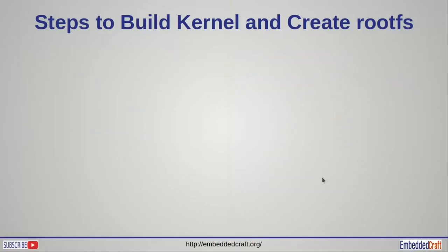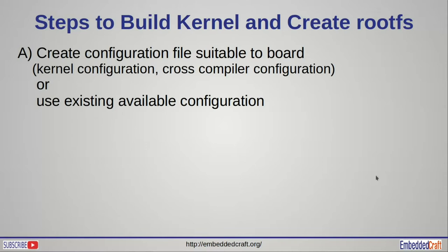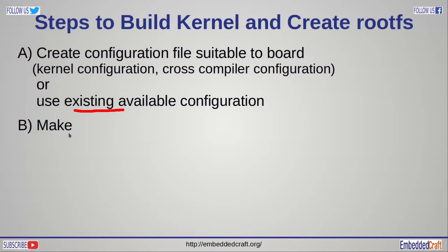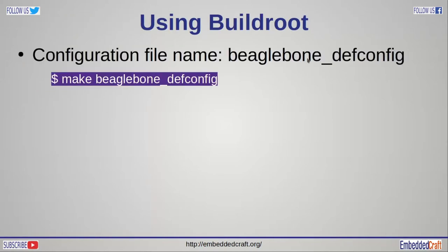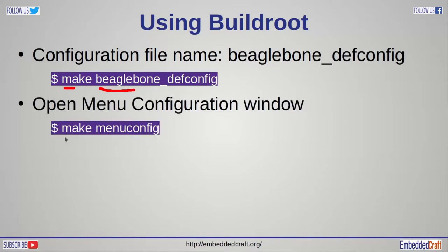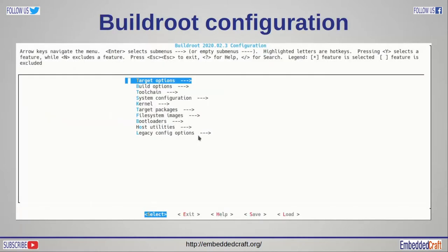Let us see the steps to use Buildroot. First, we have to create configuration files suitable to our board — we need to create a kernel config file and cross-compiler configuration file. Instead of creating files from scratch, we can use an existing defconfig file and later modify some options to suit our board. After that the step is simple — just use the make command. To generate the .config file, use make beaglebone_defconfig. To review the generated .config file and all settings, we will use make menuconfig, which will open a configuration window where you can choose relevant config options.